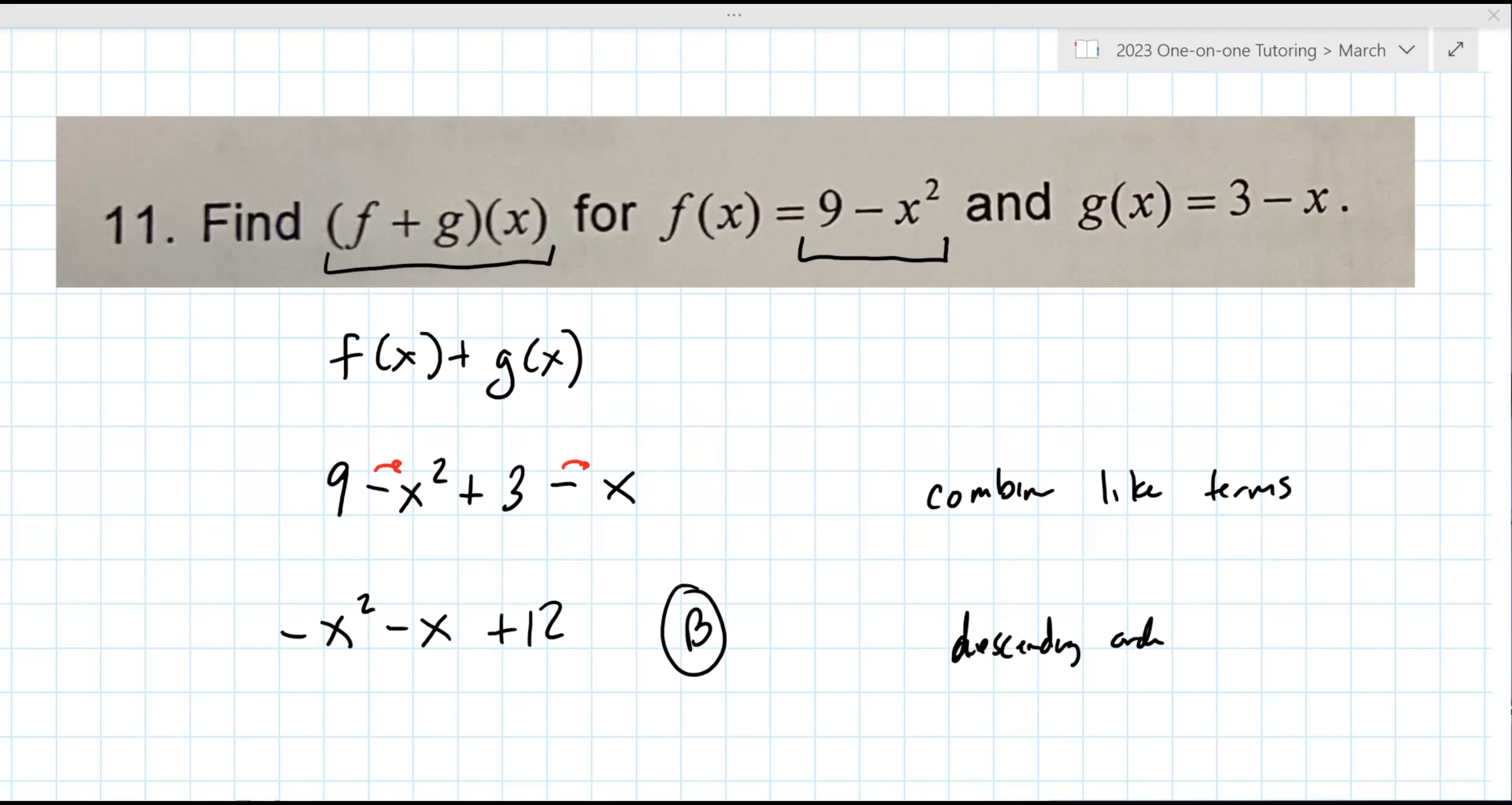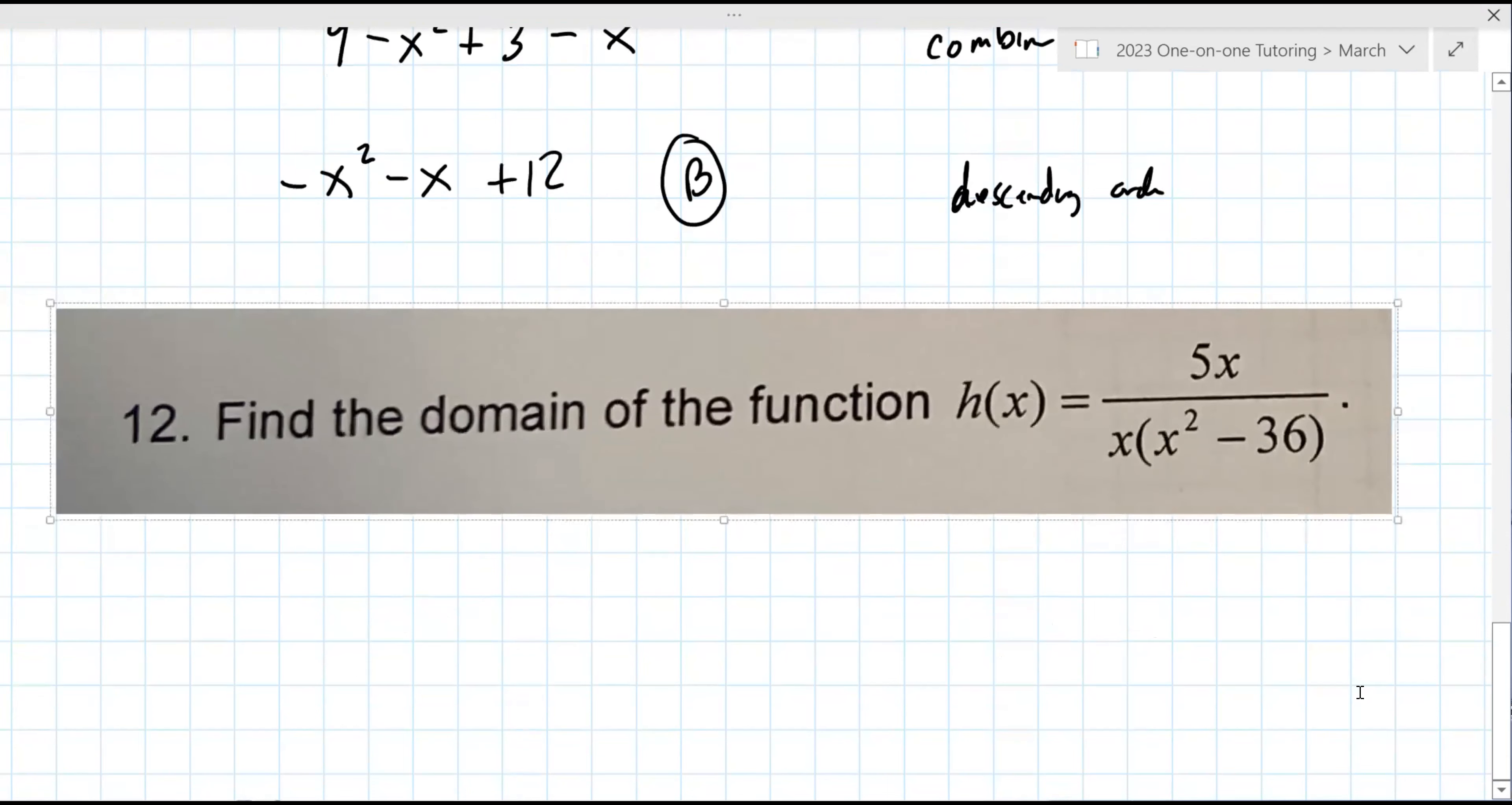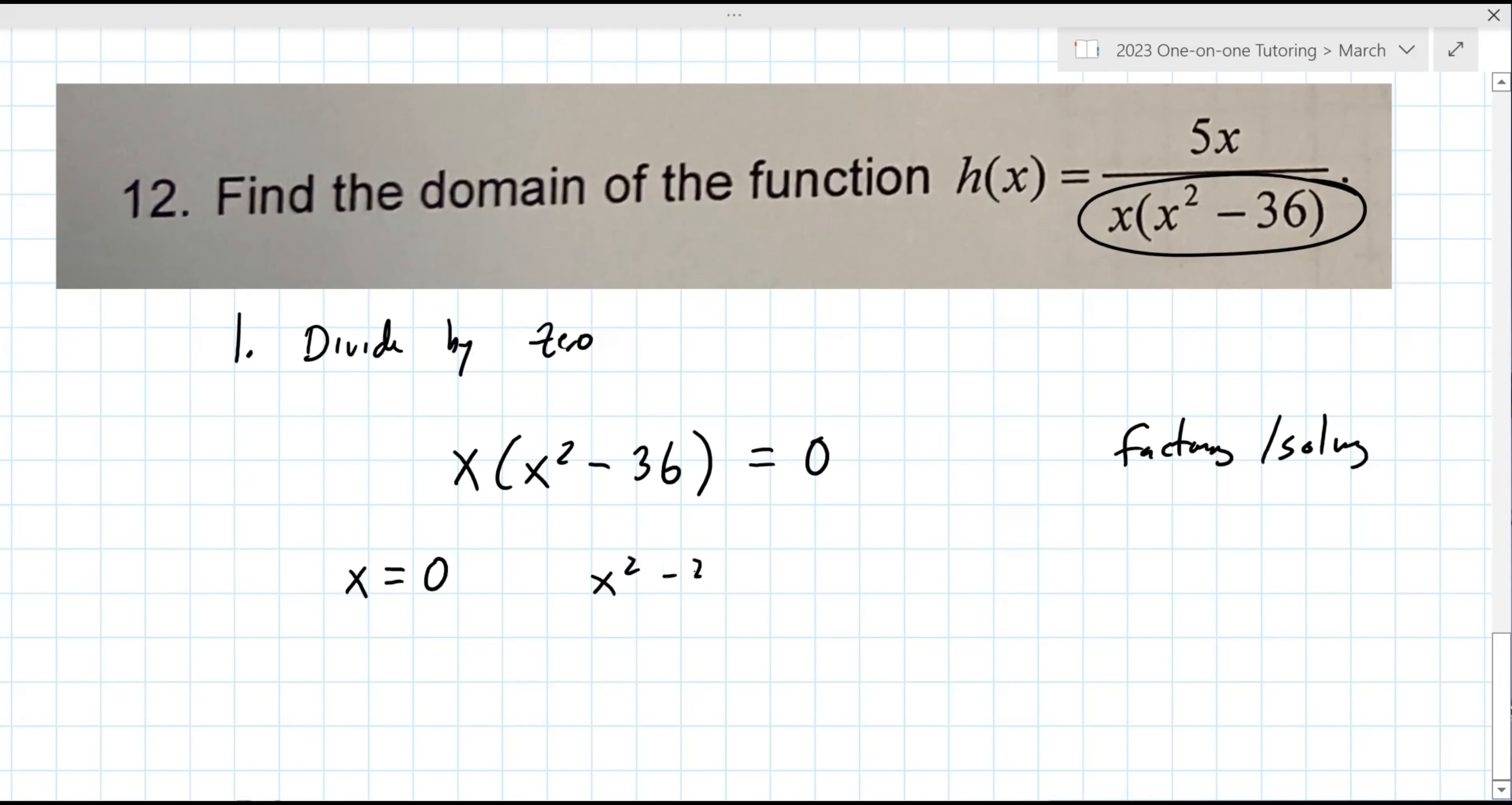Number 12. All right, find the domain of the function h of x equals five x over x times x squared minus 36. So there's kind of two rules in math that you have to always adhere to. One is you cannot divide by zero. Division by zero is just the worst thing in the world in math terms. So what you're looking for here is where does the bottom part, where does the bottom part equal zero.